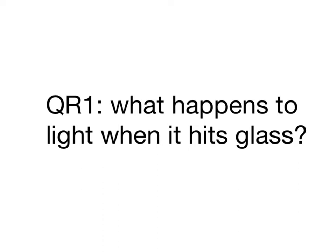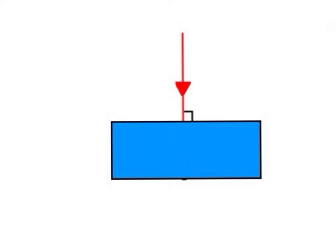Well done for scanning your first QR code. This video is about what happens to light when it hits glass. Light travels incredibly fast in air, but slows down when it reaches a material like glass.